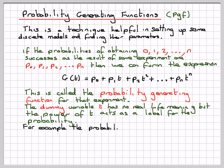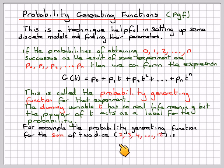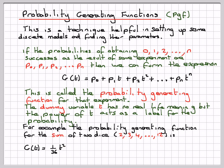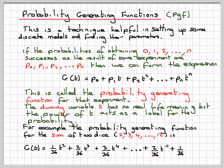For example, the probability generating function for the sum of two dice — the numbers that two dice can take are 2, 3, 4, all the way up to 12 (since 6 + 6 = 12) — is G(T). The probability of getting a 2 is 1/36 · T², so the 2 is the label for the probability. Then 2/36 · T³, plus 3/36 · T⁴, and so on, up to 2/36 · T¹¹ plus 1/36 · T¹².